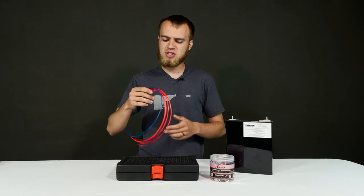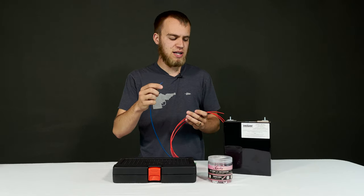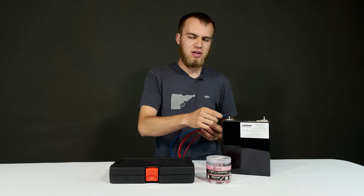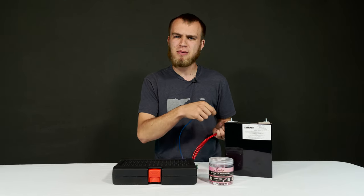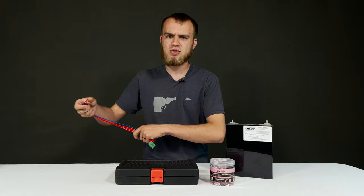Now what is a crimp terminal you may ask? It's something we use when we have a wire or balance lead and we need to connect it to something like a battery. You wouldn't want to just strip this back, wrap it around the stud and put the nut on it. It wouldn't make a very good connection. So we use crimp terminals.